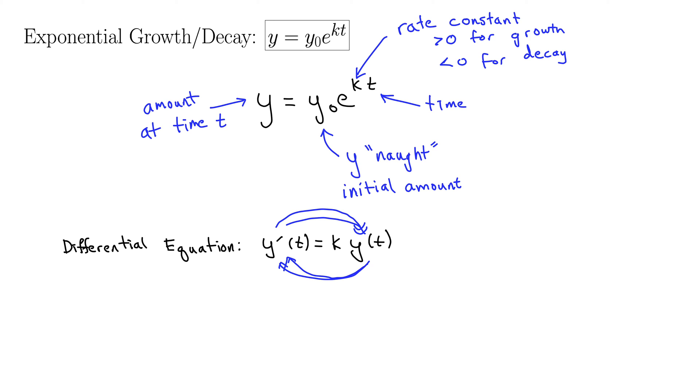We use this to derive our equation for exponential growth and decay. Here's how to do that. y prime of t is technically dy dt. Okay, equals ky. I'll just leave the of t out of here.